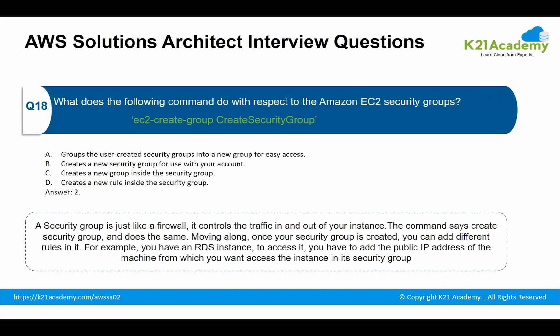Moving to the next question: what does the following command do with respect to Amazon EC2 security groups? A security group is just like a firewall — it controls the traffic in and out of your instance. In AWS terms, this is inbound or outbound traffic. The command mentioned is straightforward: it says 'create security group' and does exactly that. Once your security group is created, you can add different rules to it. For example, if you have an RDS instance to access, you have to add the public IP address of the machines from which you want to access the instance in its security group.